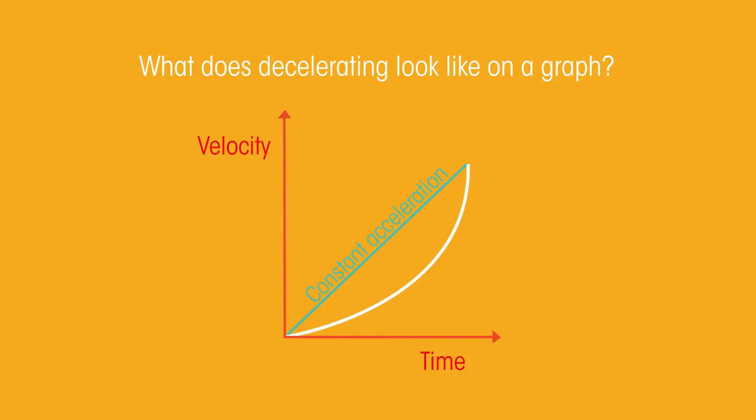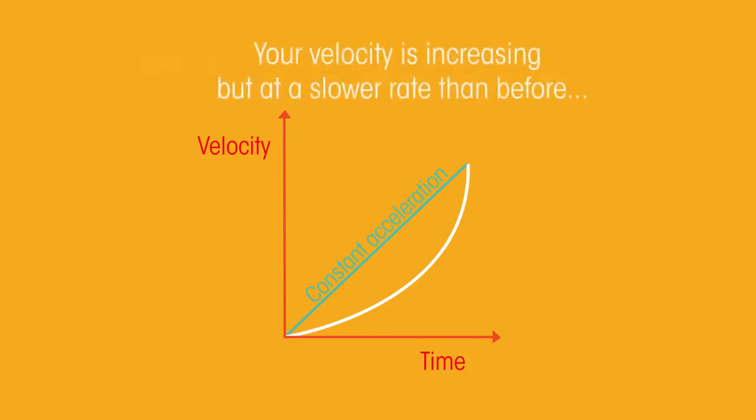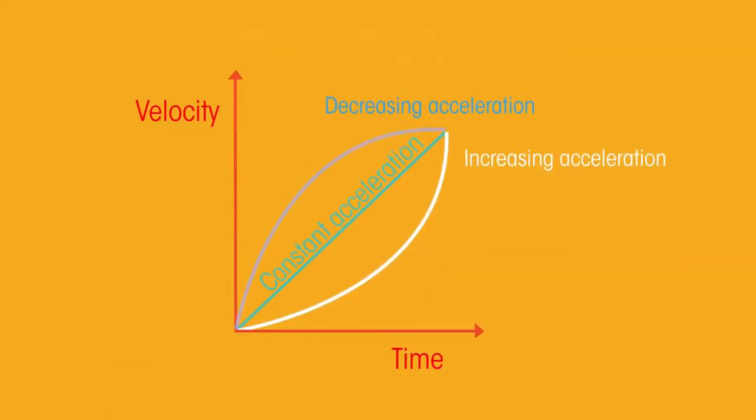What do you think this would look like on a graph? So your velocity is increasing, but at a slower rate than before. Pause the video and have a think. Did you think a curve like this? The car is still accelerating, but the rate of acceleration is slowing.